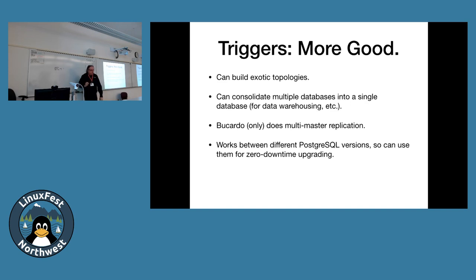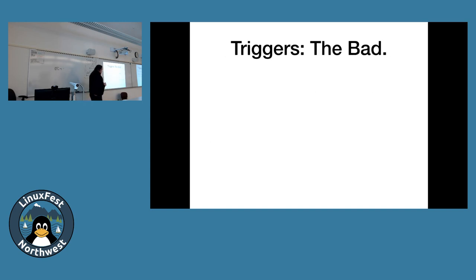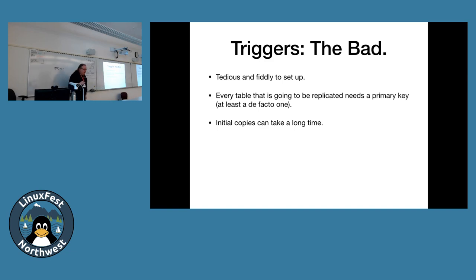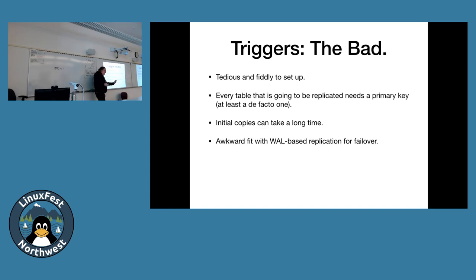Trigger-based replication works across different major Postgres versions, making it useful for zero-downtime major version upgrades: replicate, replicate, replicate, shut down the old one, bring up the new one, rehome your application, done — very fast. But there's bad stuff: it's really tedious to set up (this is where you hire consultants). Every table being replicated needs a primary key or at least a de facto unique identifier, because you need row identity. You also have to do an initial bulk copy of the whole database, which takes time, and integrating it with WAL-based replication for failover is awkward because you don't always know where in the logical replication stream you were when failover occurred.